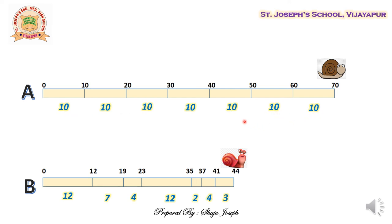If you look at all the readings for the first snail, it is 10, 10, 10, 10, 10, 10, 10, and 10 — equal distances throughout equal intervals of time. However, for snail B it is 12, 7, 4, 12, 2, 4, and 3 — all unequal distances in the same equal intervals of time. This is an example of uniform and non-uniform motion.